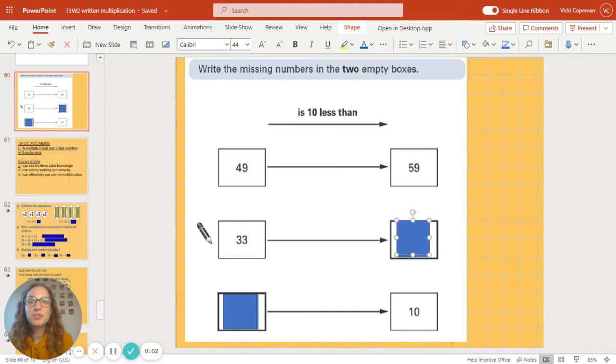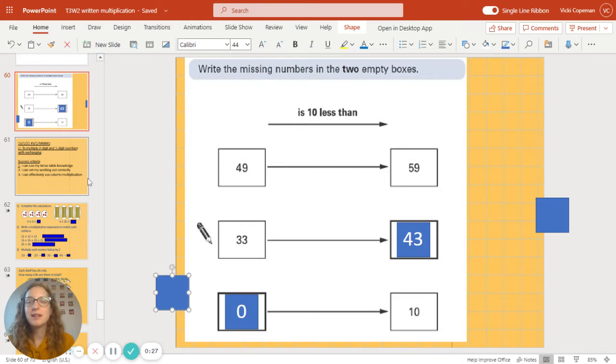Good morning Year 3, welcome to Friday's maths lesson. What I'd like to do to start with is pause the video and have a go at working out what the two missing numbers would be. Right, so the first example is 49 is 10 less than 59. Next one, 33 is 10 less than 43. And this one over here we have 0 is 10 less than 10.